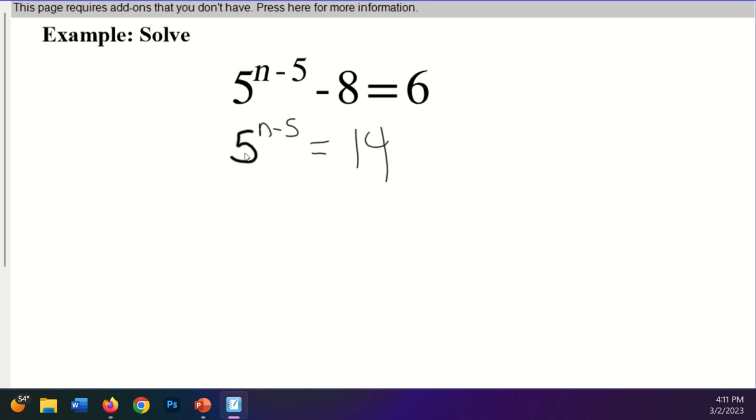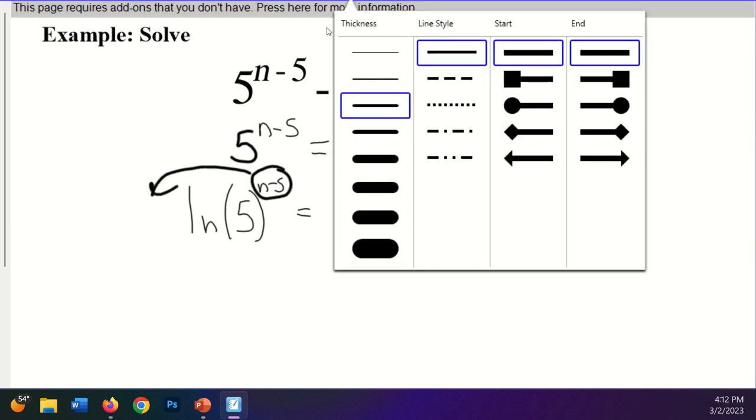Now that I have nothing in front of the exponential and it's by itself, I can take the logarithm of both sides. You can take any logarithm, and just because I want to write as least amount as possible, I'm going to use ln. So I'm going to go the ln of 5 to the n minus 5 is equal to the ln of 14. Then I'm going to take that and I'm going to bring this whole expression down there in front.